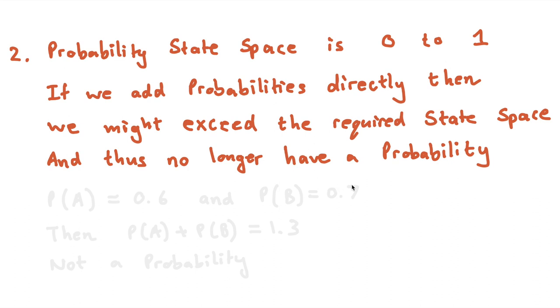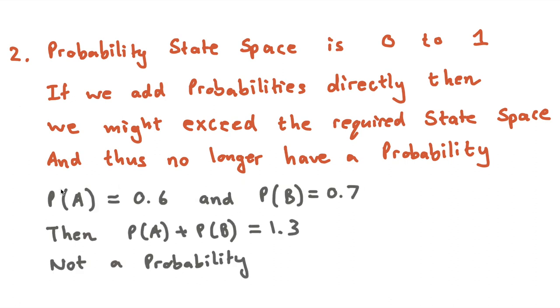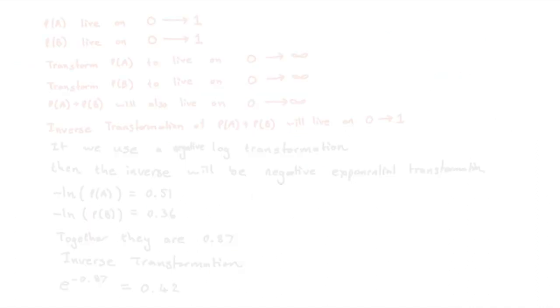So to maybe put this in like a bit of a numerical example, if we have the probability of A happening at 60% and the probability of B happening at 70%, and we want to say, well, what's the probability of these two things happening together? Well, you can't just directly add the probabilities because 0.6 plus 0.7 is going to give you 1.3, and that is not a probability. So what do we do?